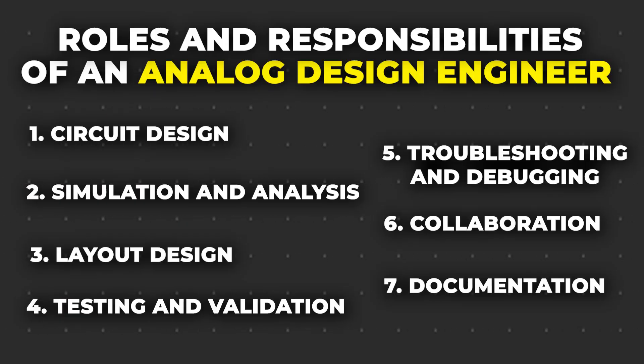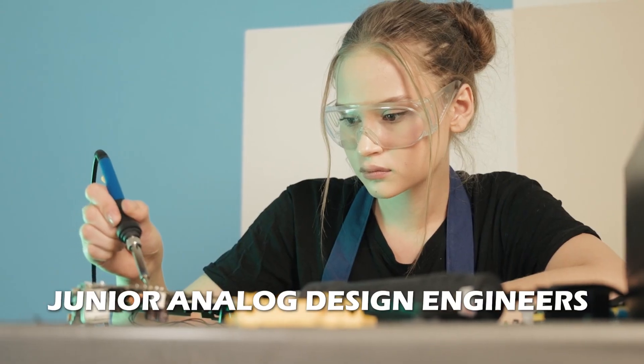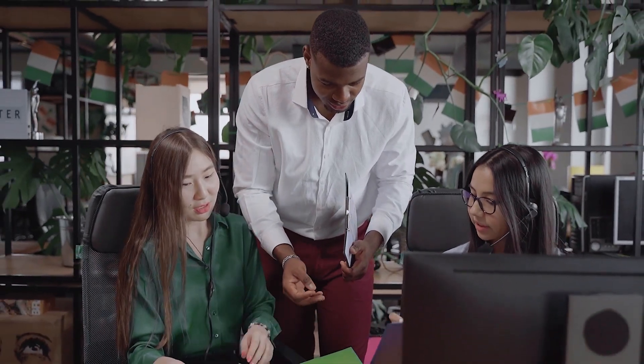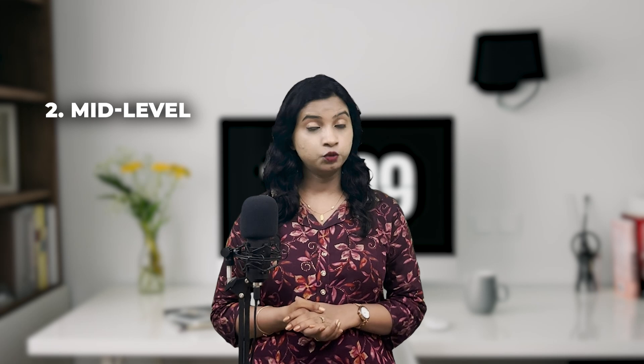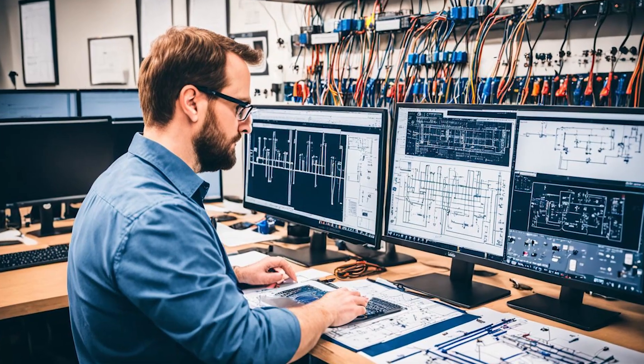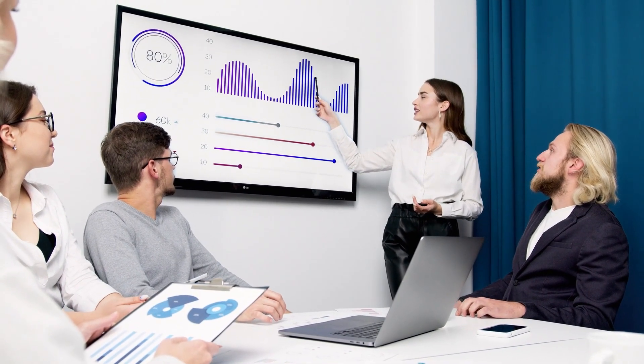Now let's look at the career growth in this field. At entry level, fresh graduates can start their career as a junior analog design engineer or analog design trainee — assisting senior design engineers, learning tools and methodologies, and working on smaller design tasks. At mid-level, with three to five years of experience, you can move into the role of analog design engineer or senior analog design engineer, handling more complex designs, leading smaller projects, and mentoring junior engineers. Senior roles include lead analog design engineer, principal engineer, or analog design manager, with responsibilities including handling multiple projects, leading the design team, and strategic planning.